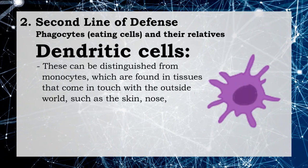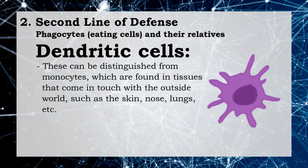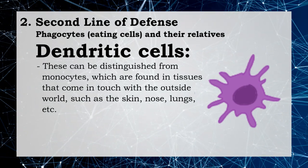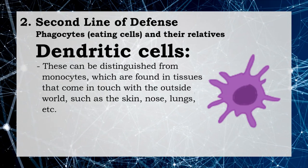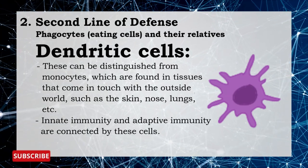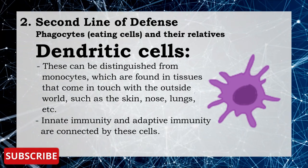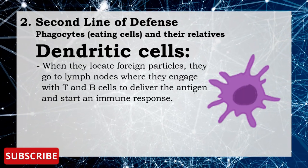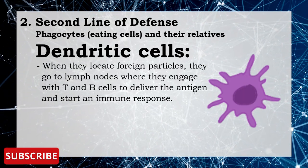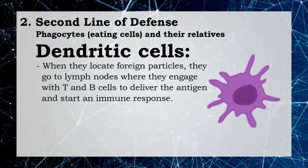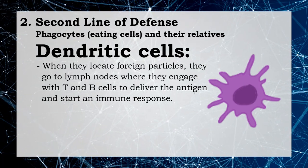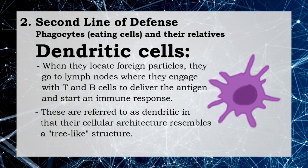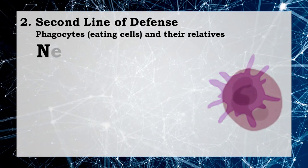Dendritic cells can be distinguished from monocytes and are found in tissues that come in touch with the outside world, such as skin, nose, and lungs. These cells connect innate immunity and adaptive immunity. When they locate foreign particles, they go to lymph nodes where they engage with T and B cells to deliver the antigen and start an immune response. They are referred to as dendritic in that their cellular architecture resembles a tree-like structure.